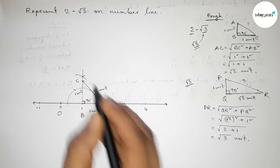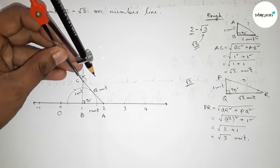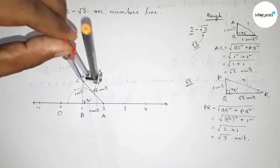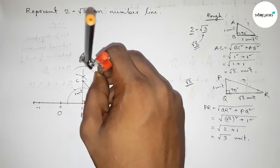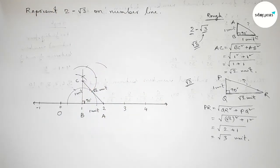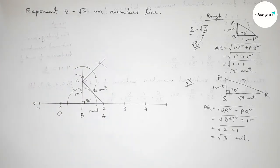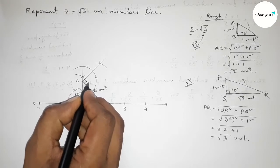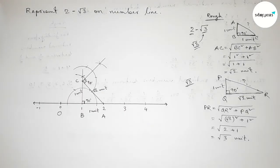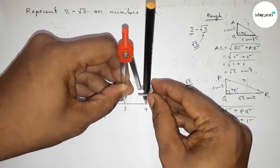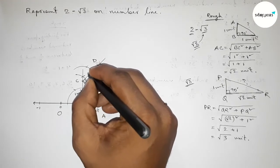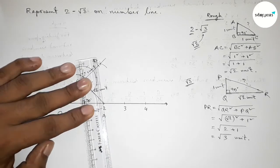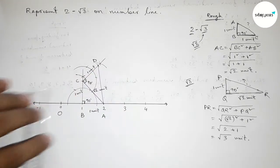Applying this concept on line AC, which is root 2. We have to construct a 90 degree angle at point C using compass. Putting the compass and taking any length, drawing an arc, then with the same length cutting arcs and joining the line to get a 90 degree angle at point C. Next taking one unit length using compass, putting the compass on point C and cutting. Taking point D, this is one unit length. Now joining A and D.